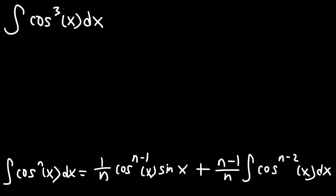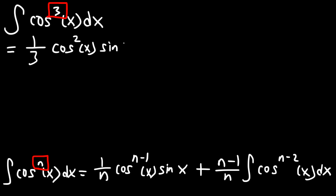In this problem, n is equal to 3. So this is going to equal 1 over n, or 1 over 3, cosine to the n minus 1 — 3 minus 1 is 2 — times sine x. Then we have n minus 1 over n, so 3 minus 1 over 3, that's 2 over 3, times the integral of cosine to the n minus 2 — 3 minus 2 is 1 — of x dx.